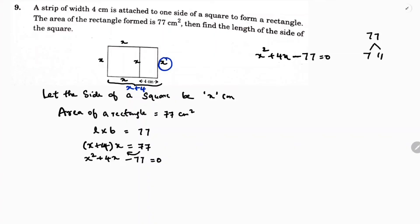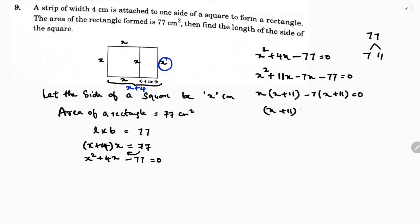We need factors giving 4x: using 11 and 7, write x² + 11x − 7x − 77. Taking x common: x(x + 11) − 7(x + 11) = 0, giving (x + 11)(x − 7) = 0. So x + 11 = 0 or x − 7 = 0, meaning x = −11 or x = 7.